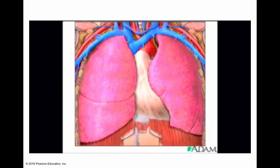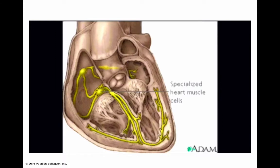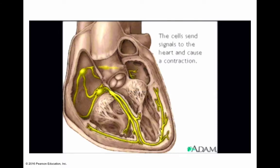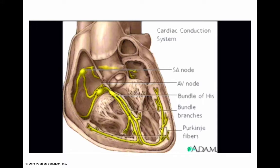The specialized cells you see are not nerves — they're actually specialized cardiac muscle cells in the walls of the heart. Their job is to send signals to the rest of the heart muscle and cause a contraction. Together, this group of cells is called the cardiac conduction system. The main components are the SA node, AV node, bundle of His, bundle branches, and Purkinje fibers.